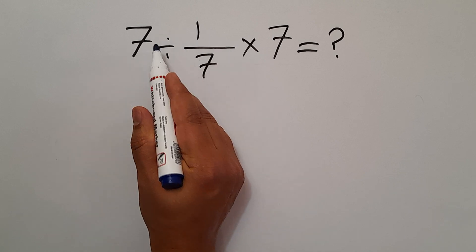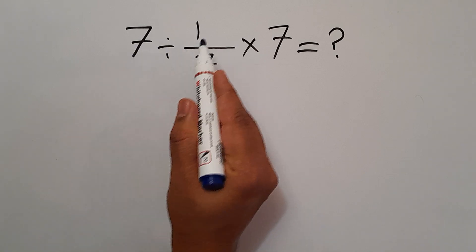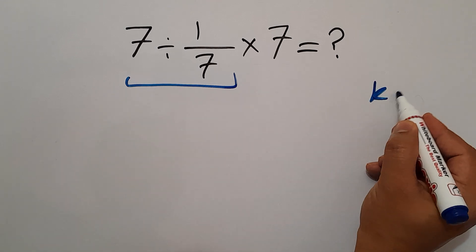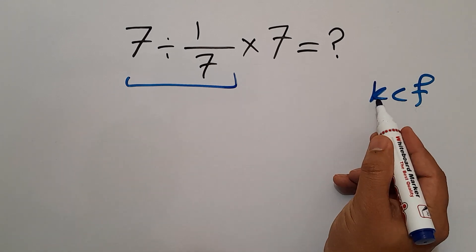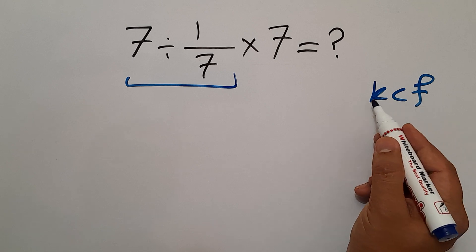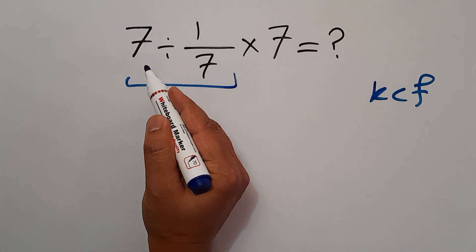So first, this division: 7 divided by 1 over 7. According to the KCF rule, K stands for keep, C stands for change, and F stands for flip. Keep the first fraction, change division to multiplication, and flip the second fraction.